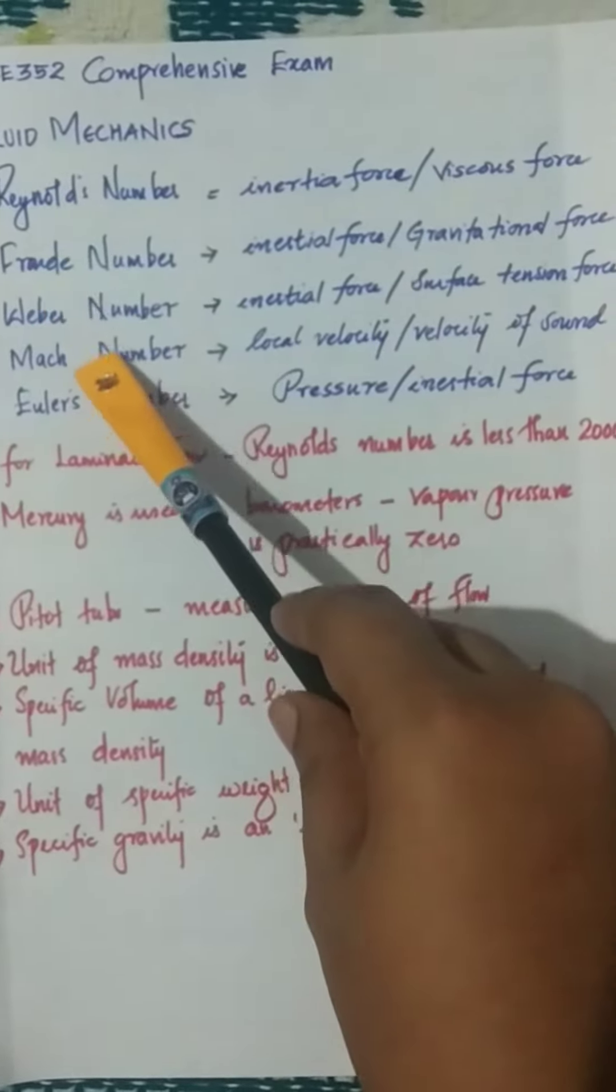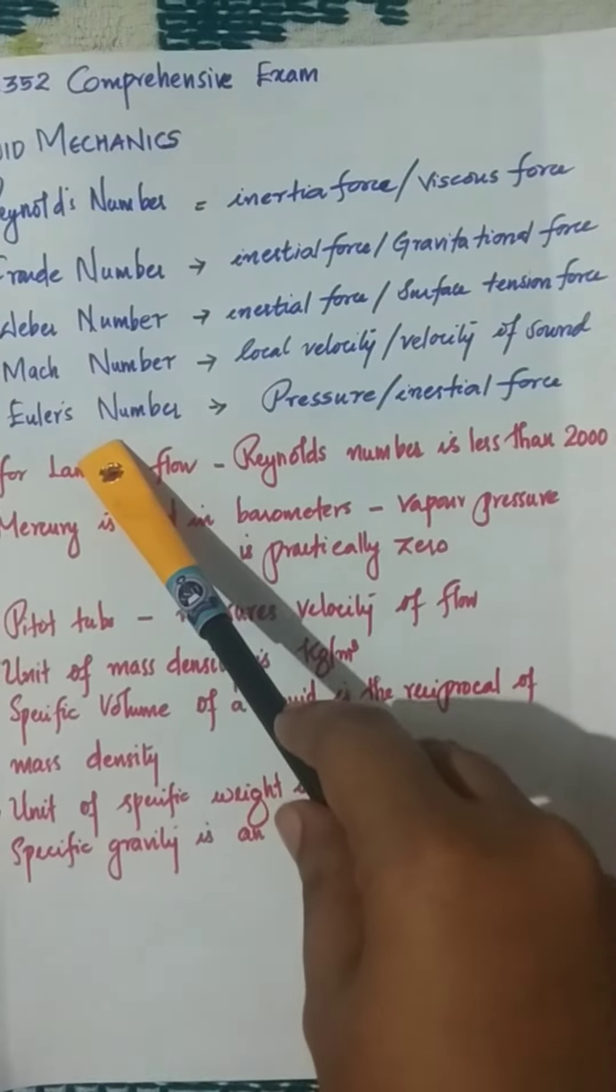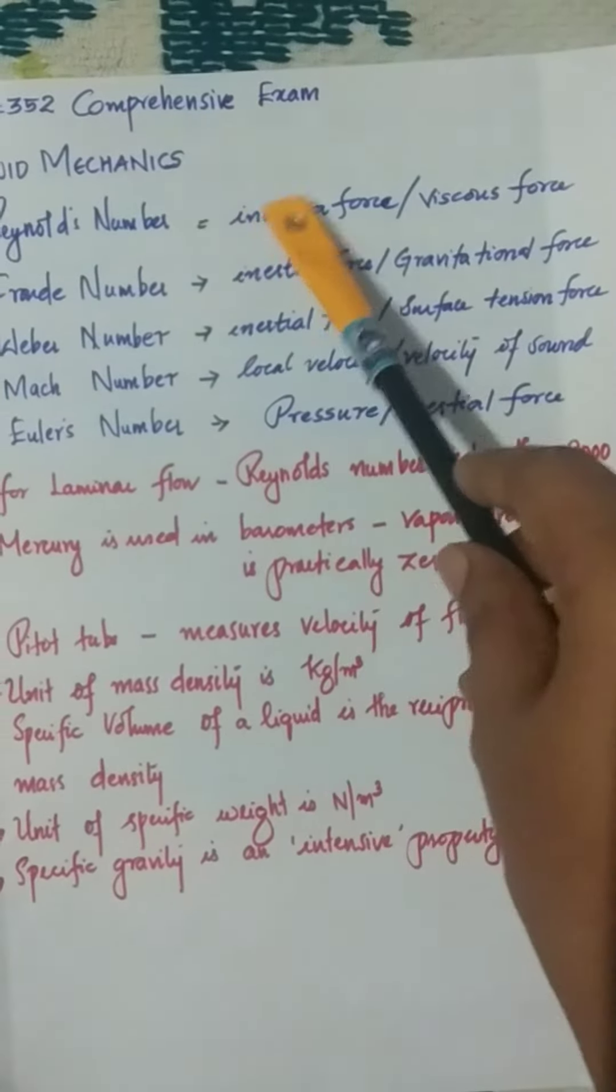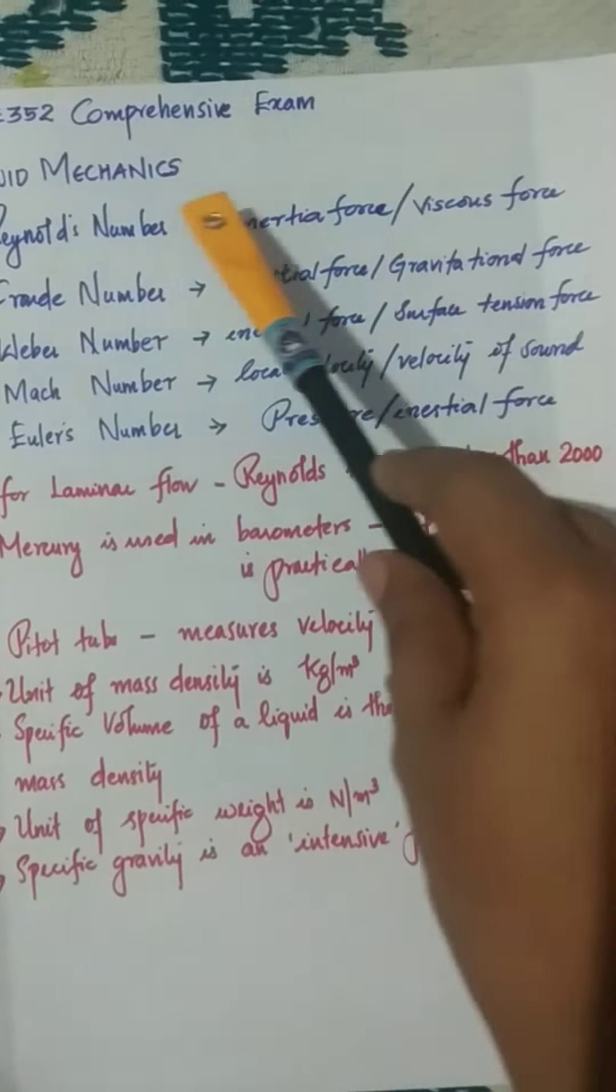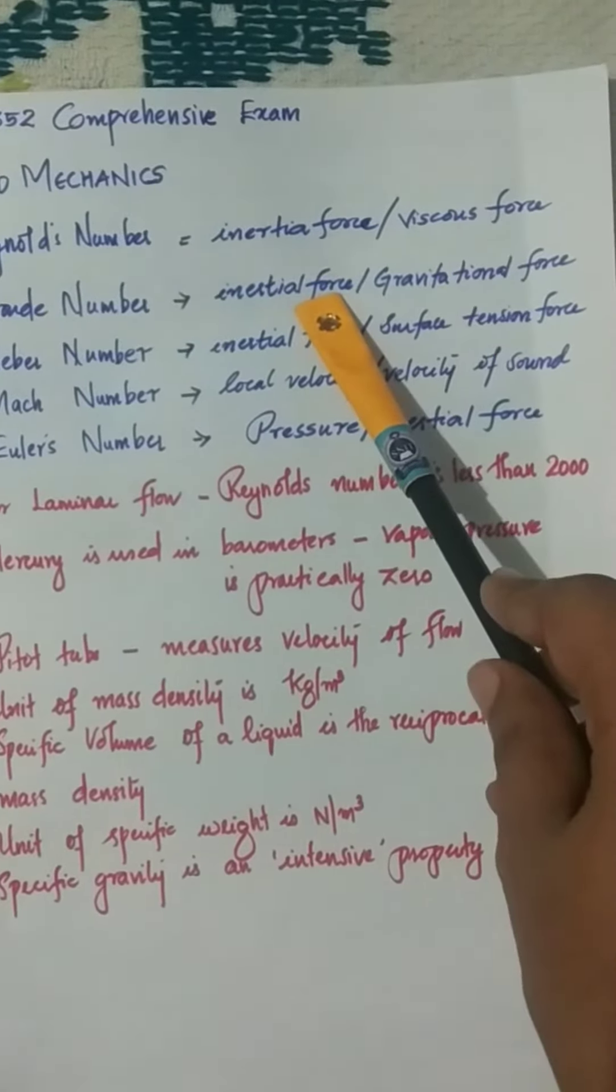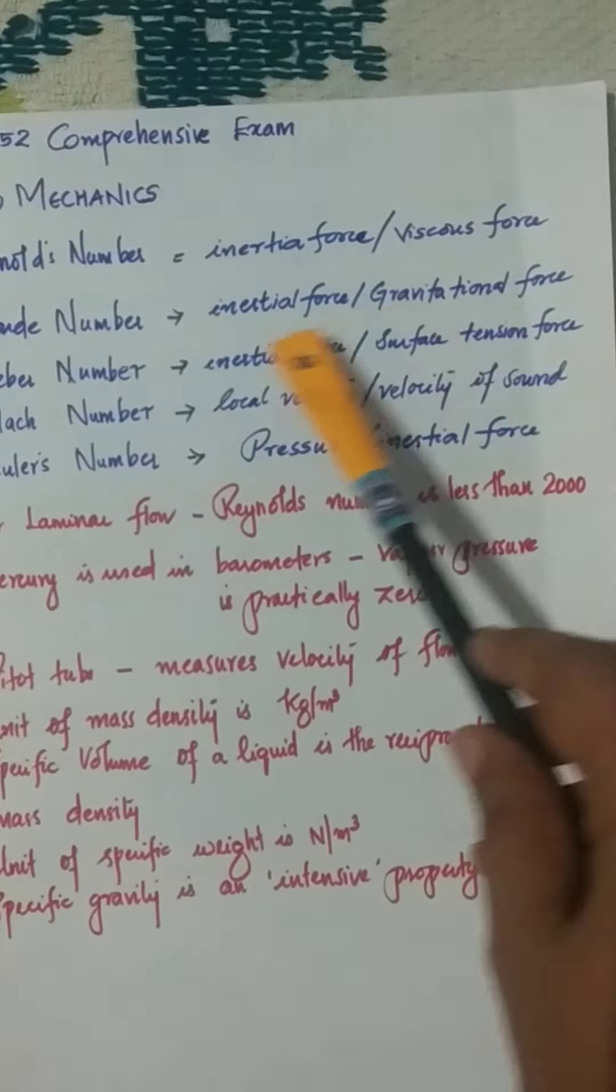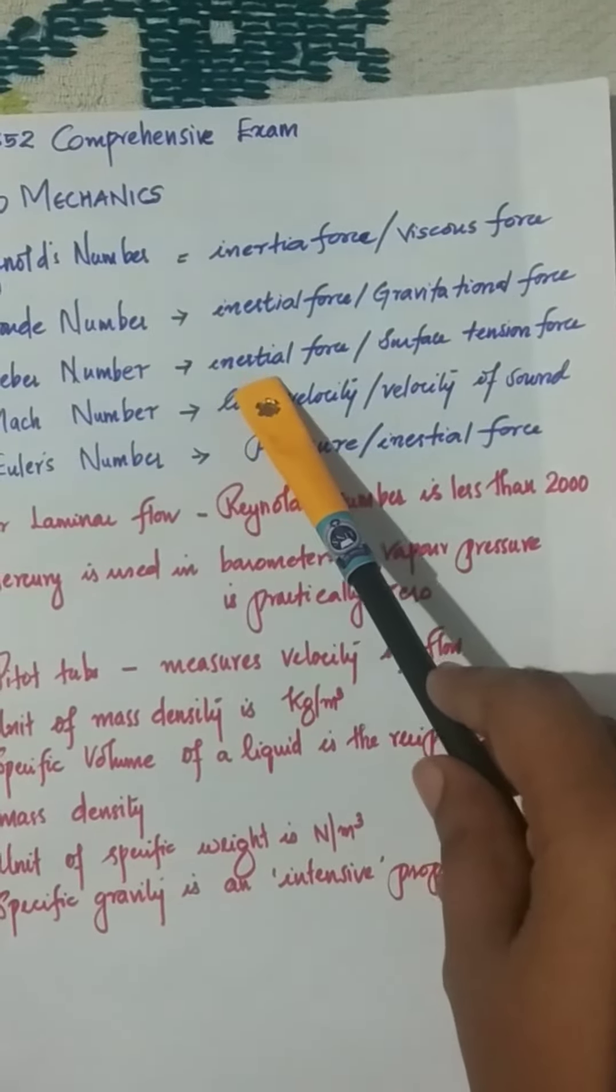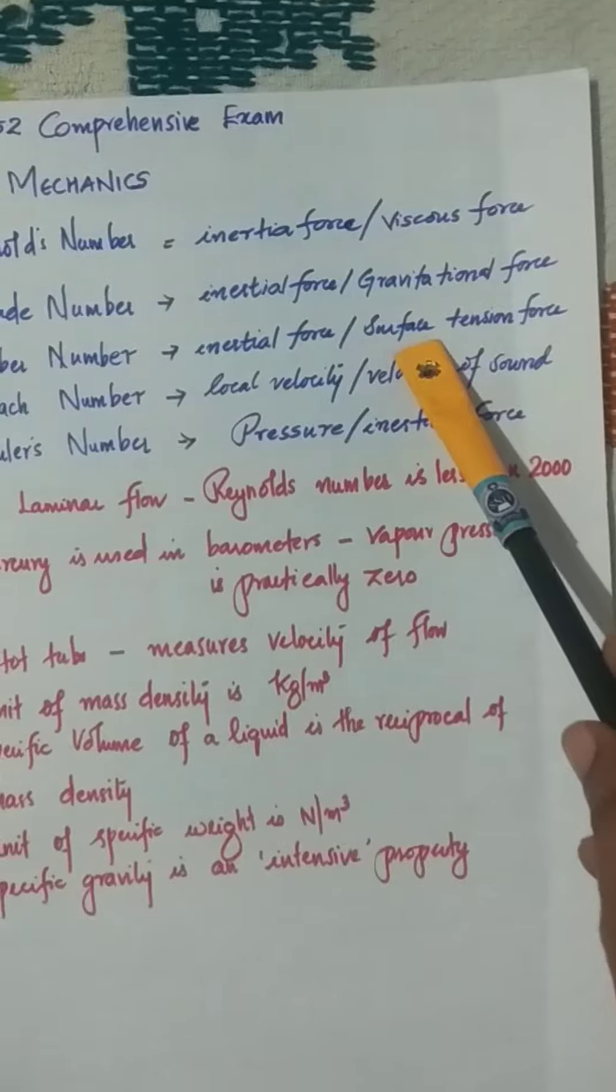As you know, Reynolds number is the ratio of inertia force to viscous force. It is the most important concept we need to study in fluid mechanics, followed by Froude number, the ratio of inertia force to gravitational force. Weber number is the ratio of inertia force to surface tension force.